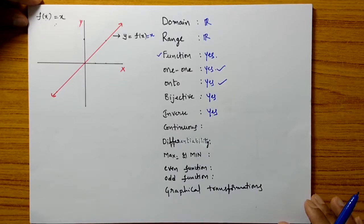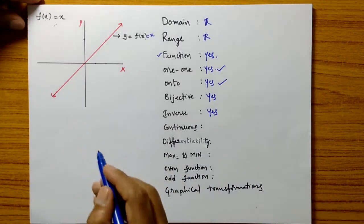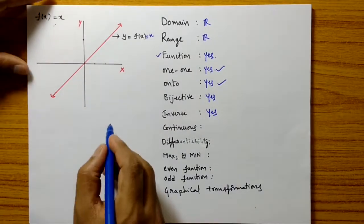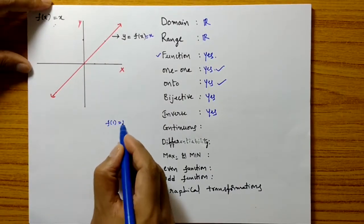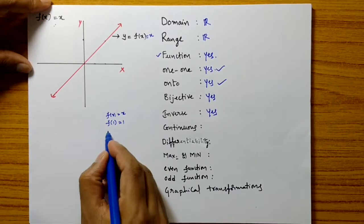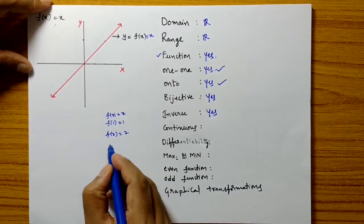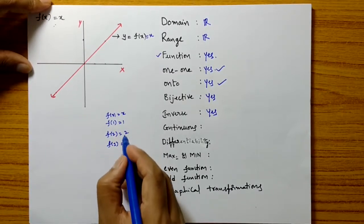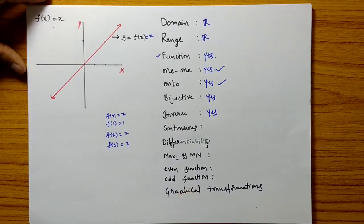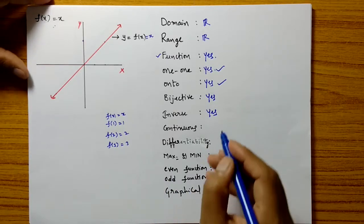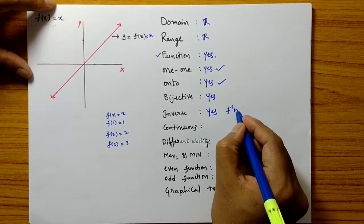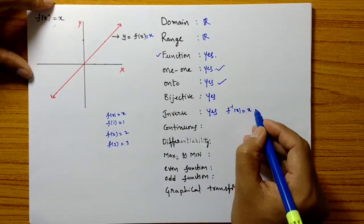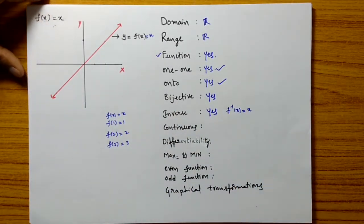What is the inverse of this function? You can observe that it is an identity function. f of 1 is 1, f of 2 is 2, f of 3 is 3 — it is an identity function. As it is an identity function, its inverse is itself. That means f inverse of x equals x, since the identity function is its own inverse.